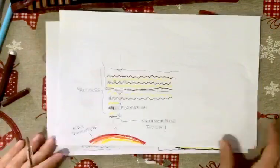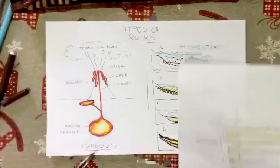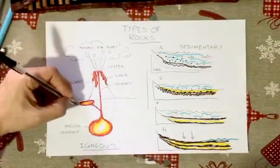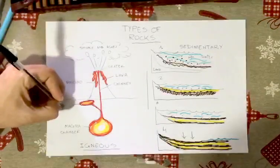This is what we call metamorphic rocks, like quartzite or basalt. Remember, igneous rocks can be intrusive or extrusive.